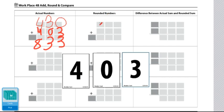Now we're going to talk about rounding. If I rounded 430 to the nearest 100, it would be 400. And if I rounded 403 to the nearest 100, it would also be 400.